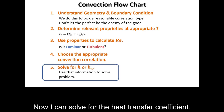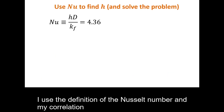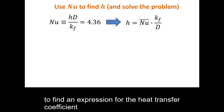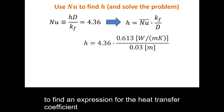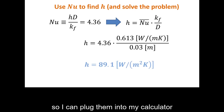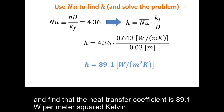Now I can solve for the heat transfer coefficient. Using the definition of the Nusselt number along with my correlation — which in this case is just the constant 4.36 — I find an expression for h. Plugging in the known values, including thermal conductivity and pipe diameter, I find that the heat transfer coefficient is 89.1 W/m²·K.